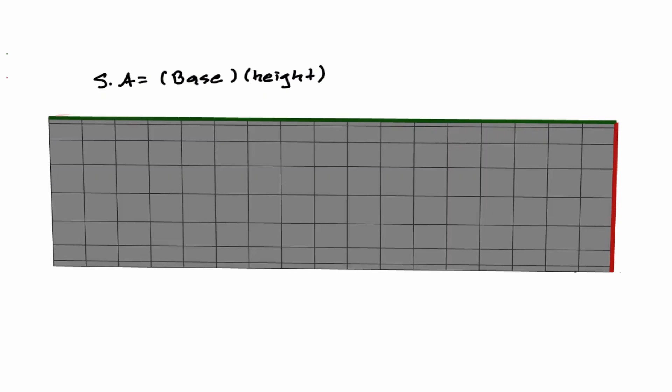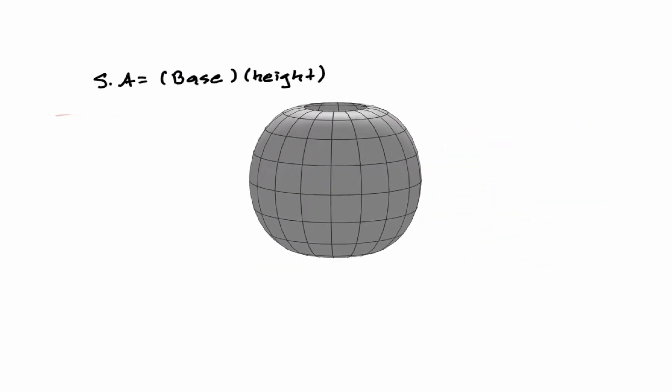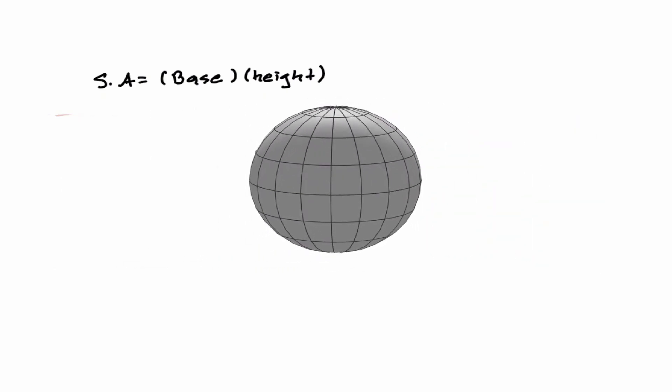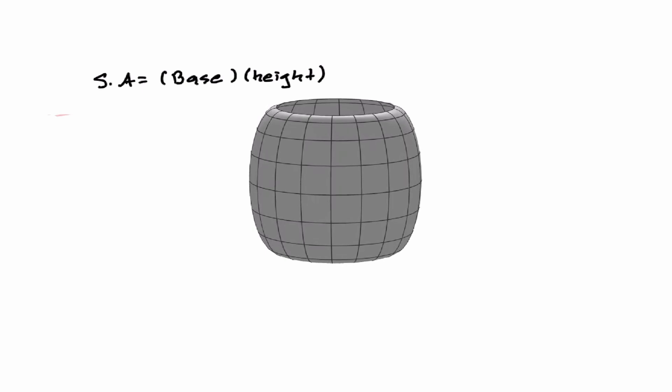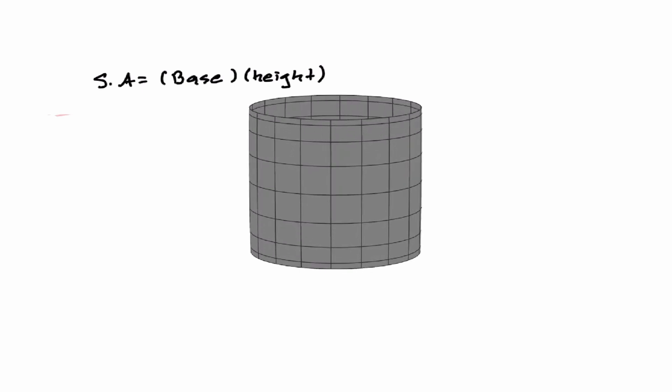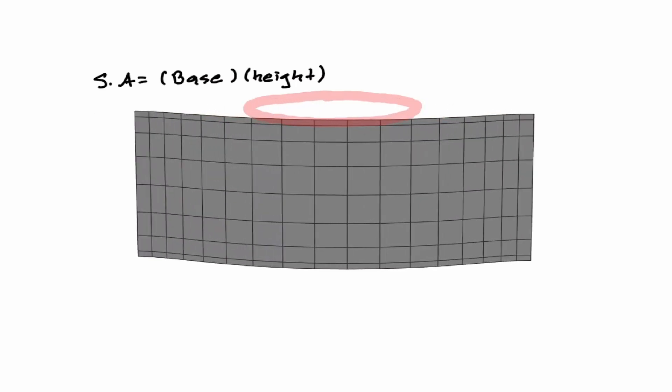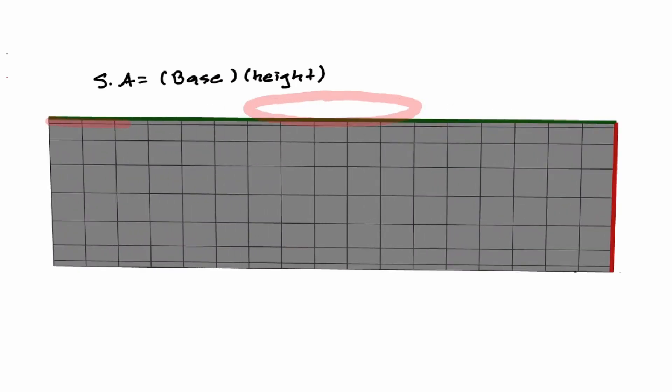If we get our sphere back, notice that when we're opening our sphere along the way we create a cylinder, and if we concentrate on the upper part of the cylinder and consider the circumference of the circle, when we continue opening this sphere that circumference becomes the base of this rectangle.